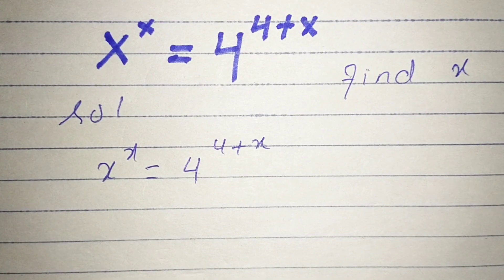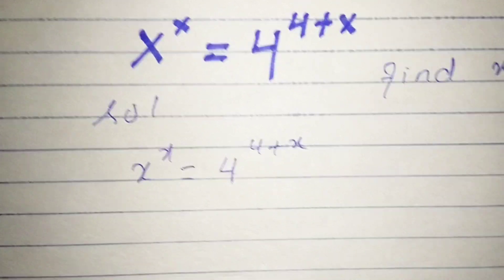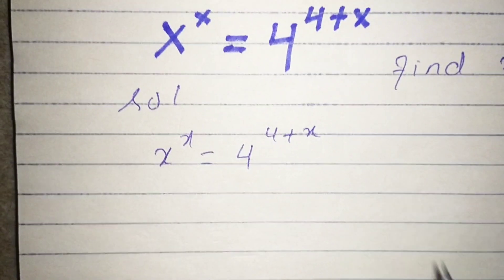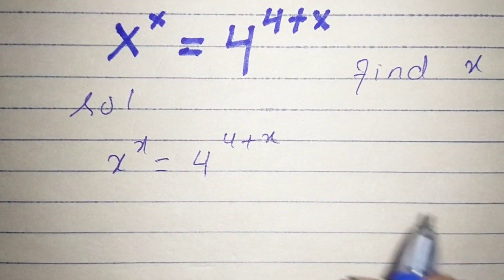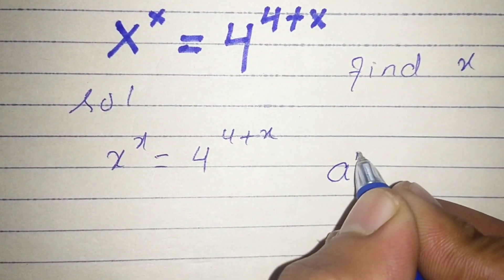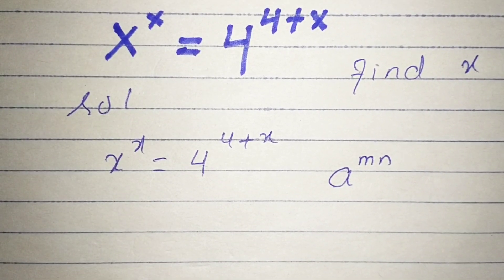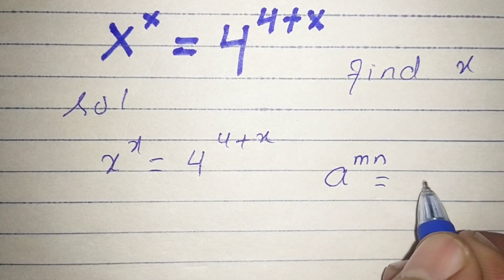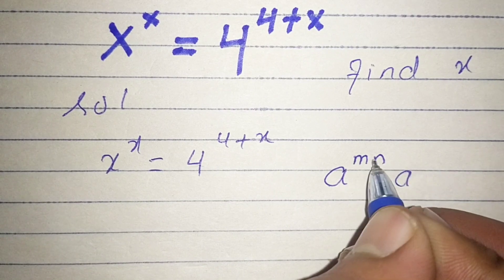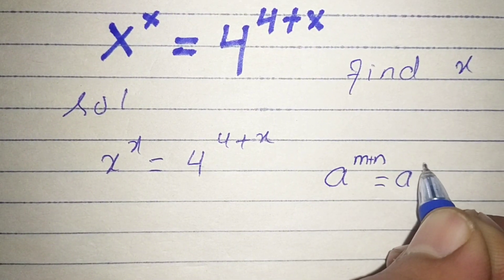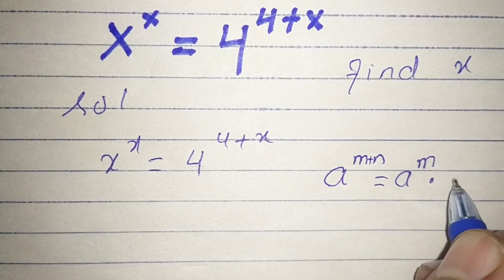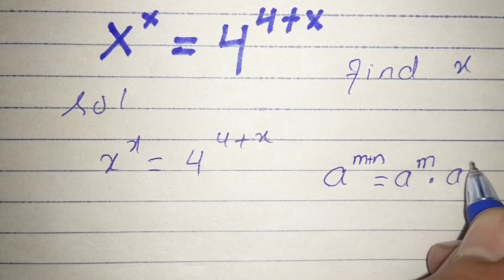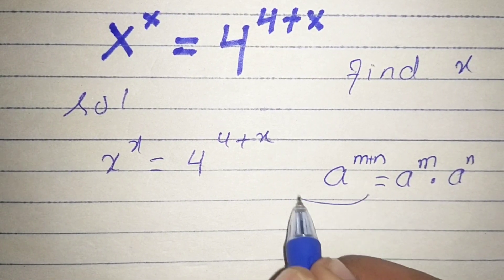We have the product rule that a to the power m times n equals a to the power m plus n, which equals a to the power m times a to the power n. Applying this rule here,